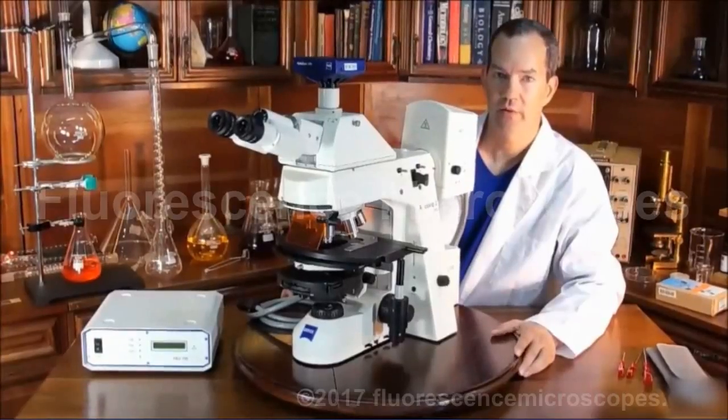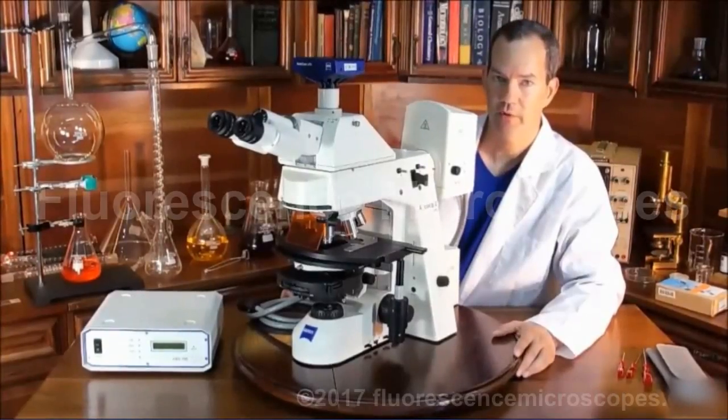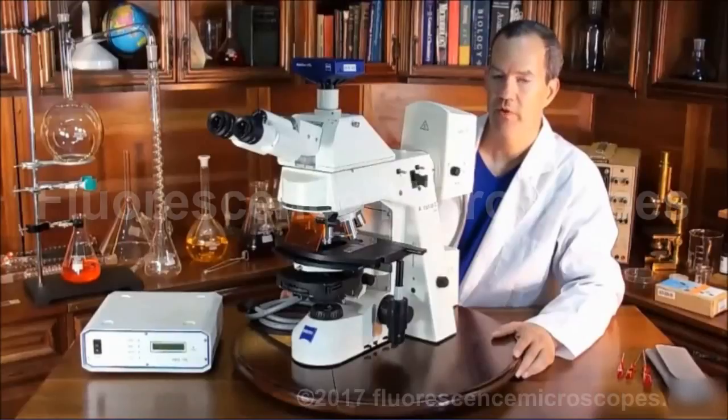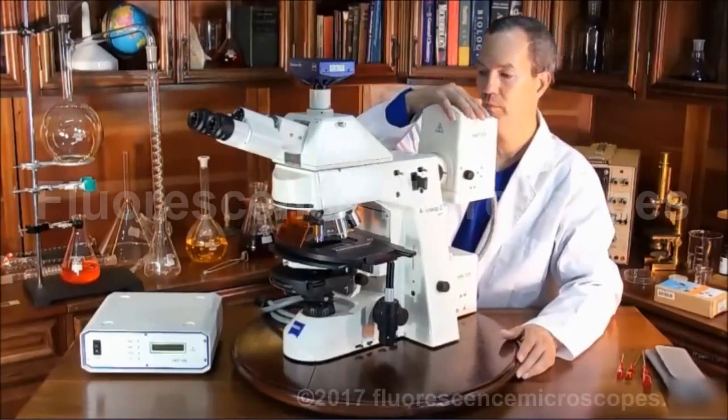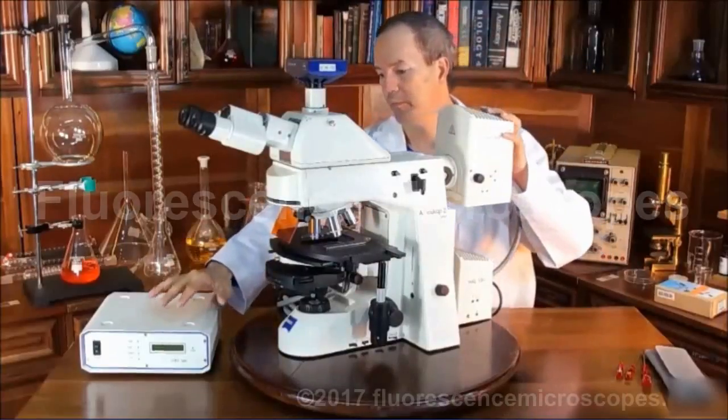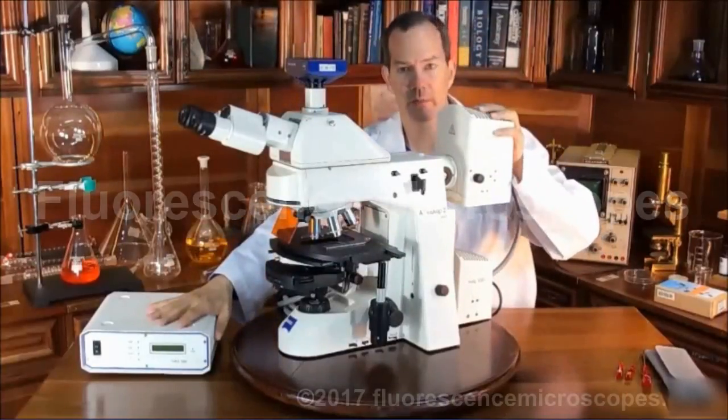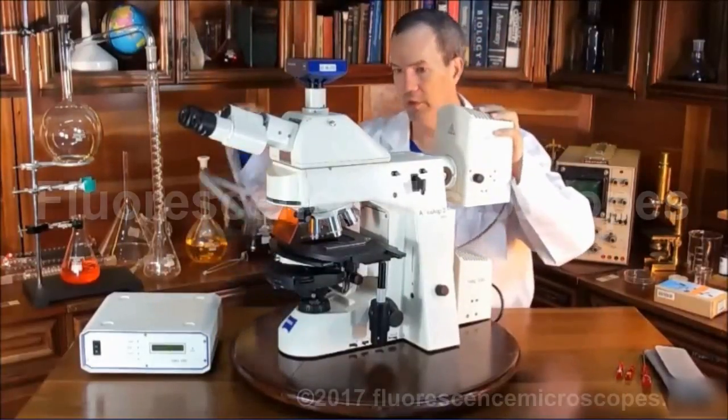This is a Zeiss Axioscope II upright fluorescence microscope. We've configured it with a 100-watt HBO mercury. This is the power supply, this is the lamphouser, and this is the cord that connects the two.